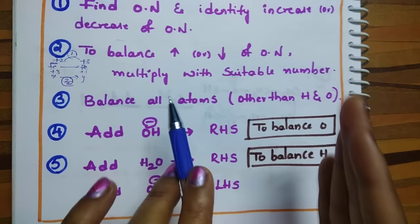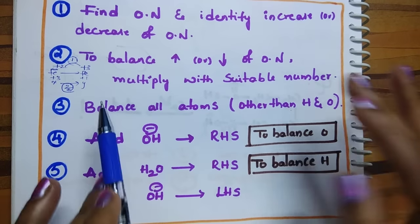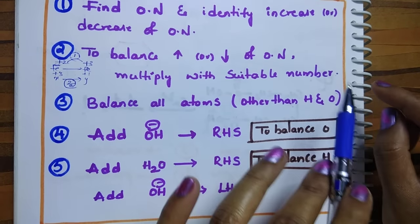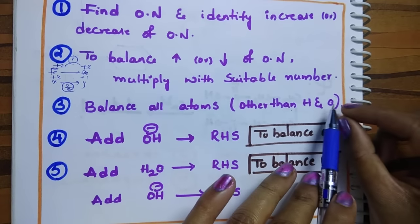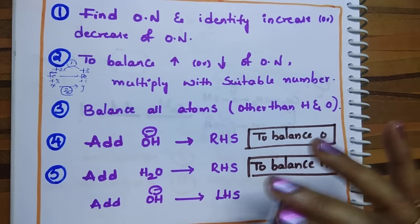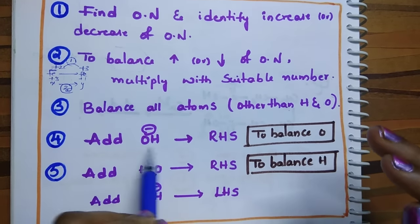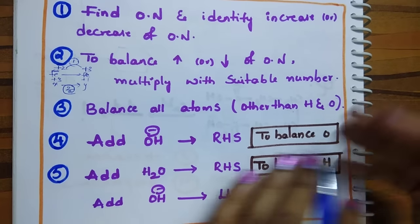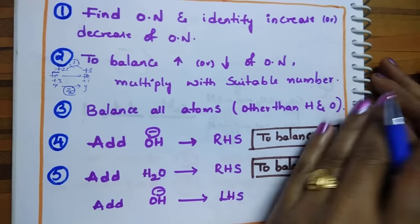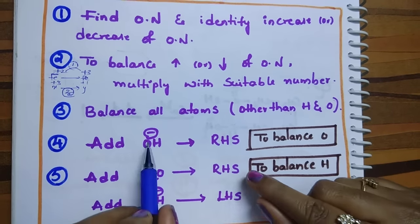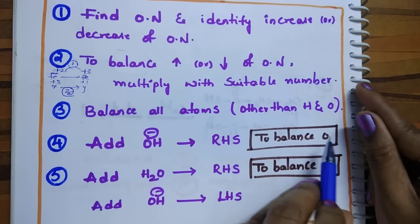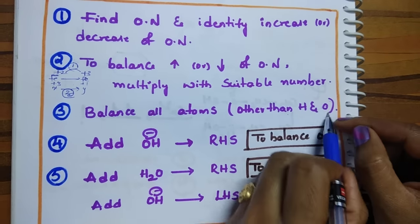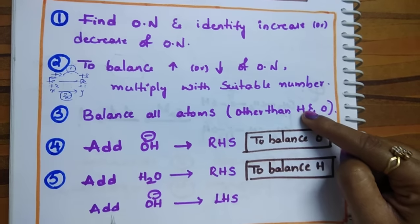Step number three: balance all atoms other than hydrogen and oxygen. Step number four: you have already balanced all other atoms, so next balance oxygen. For balancing oxygen, add OH⁻ ions to the deficient side — if the right-hand side is deficient in oxygen, add OH⁻ to the right-hand side.